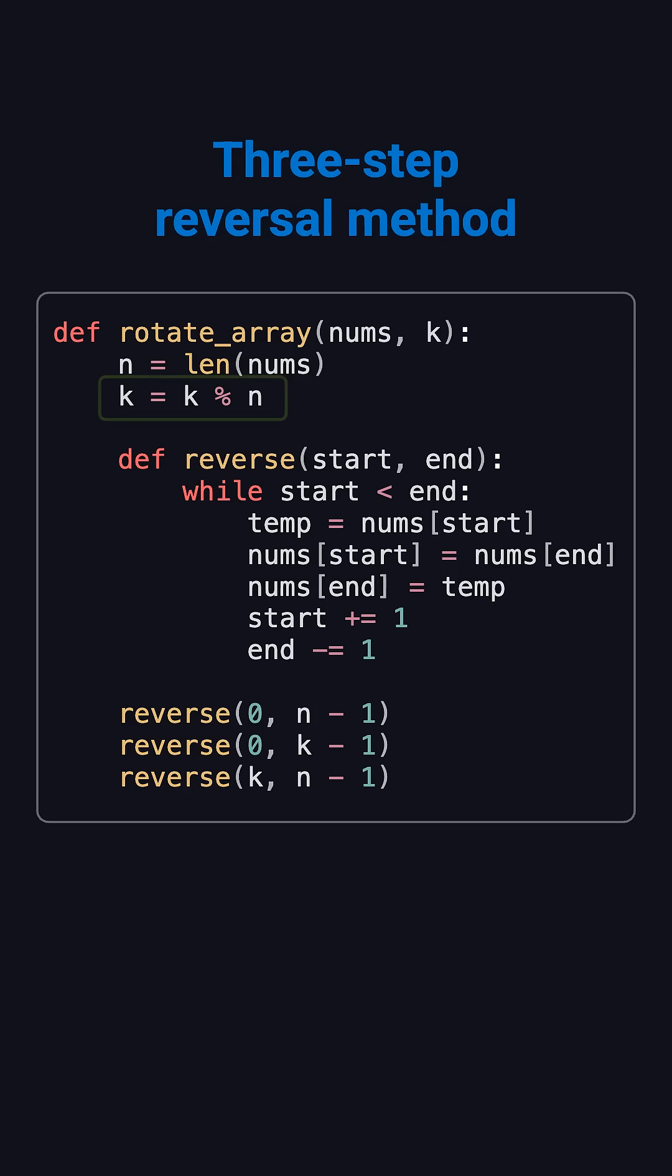The code's pretty simple, but here's an important detail. Always take k mod n. If k is bigger than the array length, say k equals 10 and n equals 7, rotating 10 steps is really just the same as rotating 3.